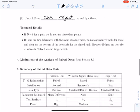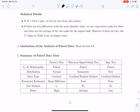So let's look at some technical details. First, if d equals 0 for a pair, then we do not use those data points. If there are two differences with the same absolute value, as I said before, we use consecutive ranks for these and then average the two ranks for that signed rank. However, if there are ties, the p-values in Table 8 are no longer exact.